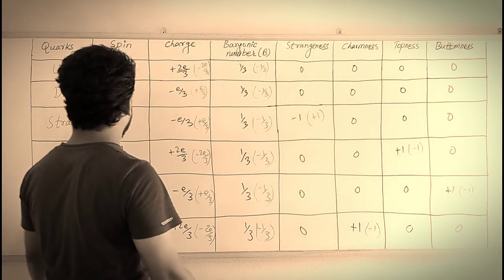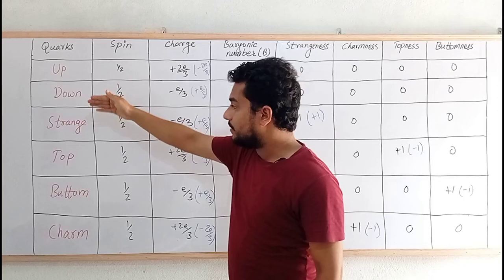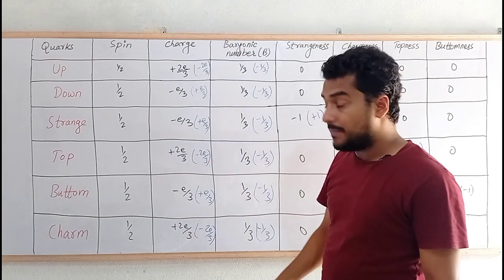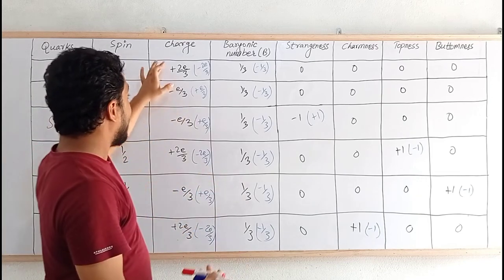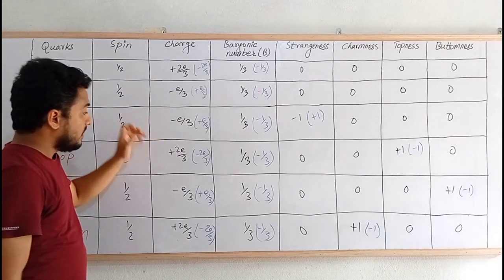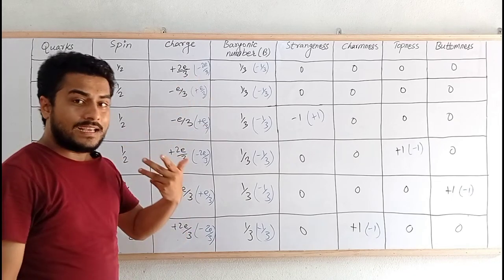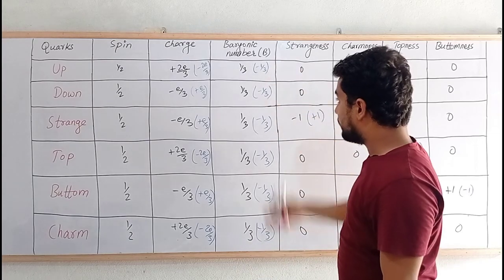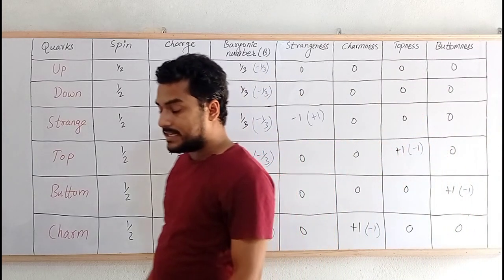So these are the properties of quarks — let me summarize. Up, down, strange, top, bottom, and charm quarks all possess half-integral spin. For charge, up, top, and charm have +2e/3, while down, strange, and bottom have -e/3; anti-particles possess the opposite signs. All quarks have baryon number 1/3 and anti-quarks have -1/3. Strangeness, charmness, topness, and bottomness each represent their respective quarks and anti-quarks.